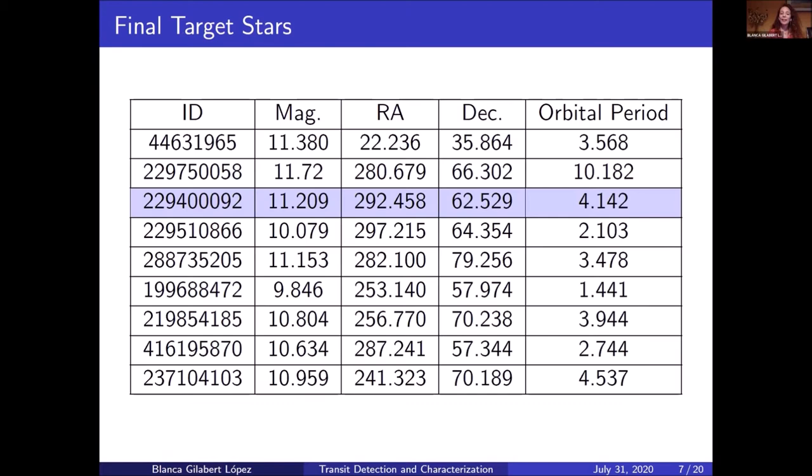From the final target stars, we chose TIC 229400092 because it was the most potential target star with a transit potential to hold an exoplanet.